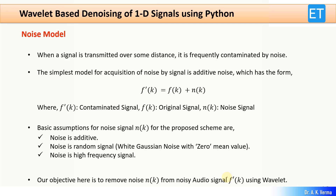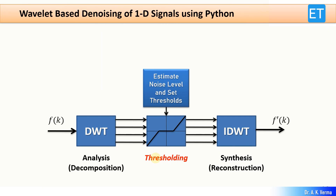This is the basic underlying technique of removing noise from signals using wavelet transform. Your signal f(k) is first decomposed into wavelet coefficients — approximation coefficients and detail coefficients. These coefficients are then thresholded, and by taking the inverse wavelet transform on the thresholded coefficients, we get our denoised signal back. The question now is how to find these thresholding levels.